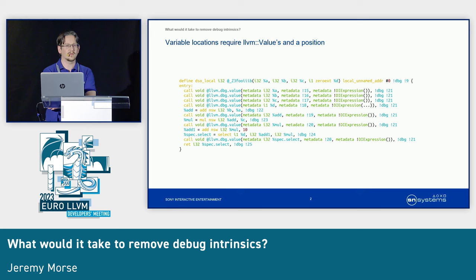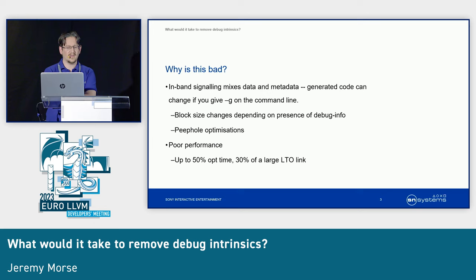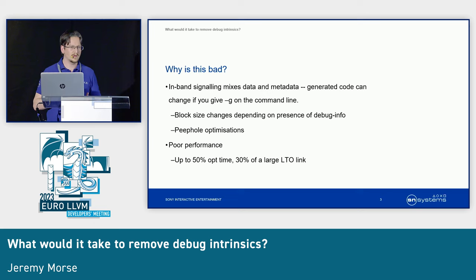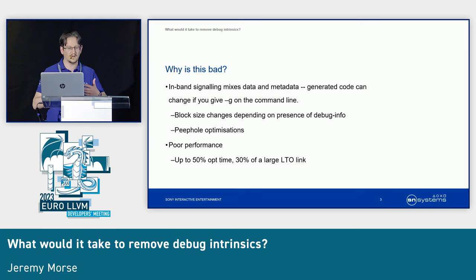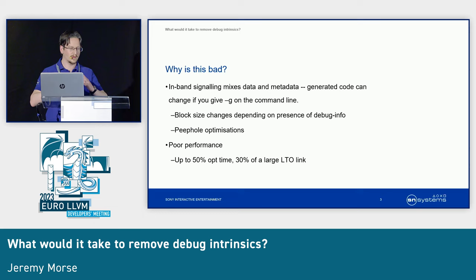Why is it bad? Well, fundamentally it mixes up data and metadata. When you're looking at some data in LLVM it may be a debug intrinsic and you may need to ignore it, or it could be real. If you put an upper or lower bound on your optimization pass saying I want to look at blocks of this kind of size, you need to know that some of those instructions in your block may be fake instructions that don't count. And fundamentally, debug info changing coaching decisions is really stupid.